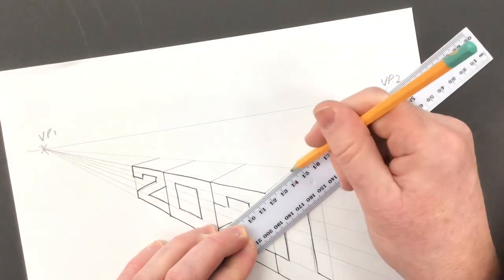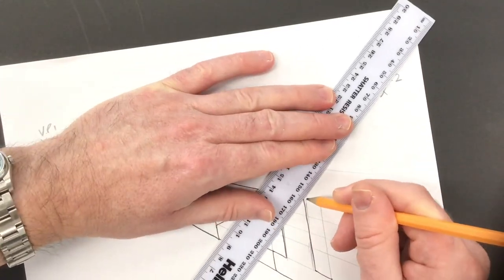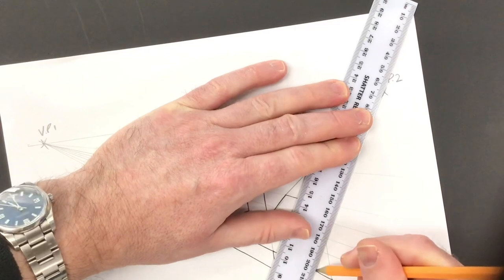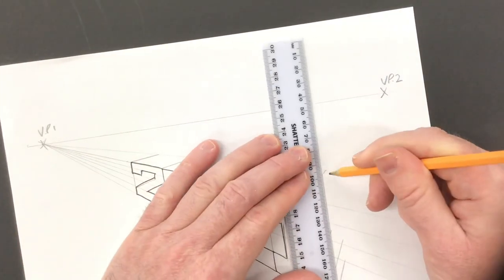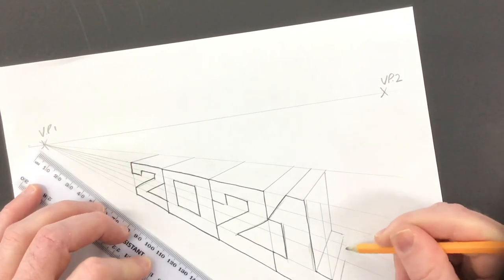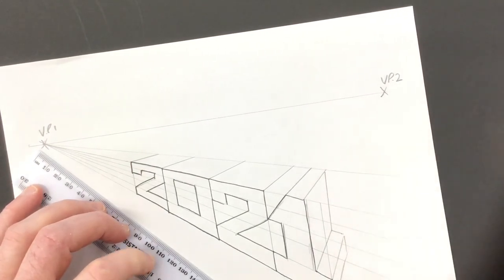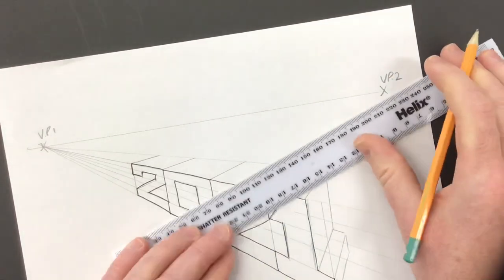Now you aim your ruler at vanishing point two and draw the lines. You can see I'm just drawing a line up to that first line I drew, and this indicates the depth of the lettering. If you wish to have it going off all the way to VP2, that's personal preference.